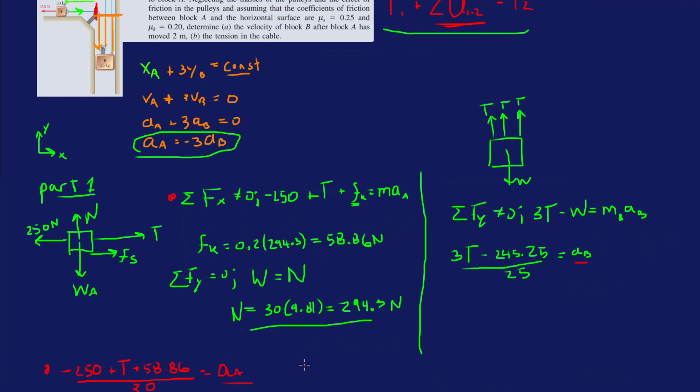So we can just plug this equation and this equation into our acceleration relationship over here. And then that gives us minus 250 plus T plus 58.86 divided by 30 equals minus 3 times AB. So 3T minus 245.25 divided by 25.